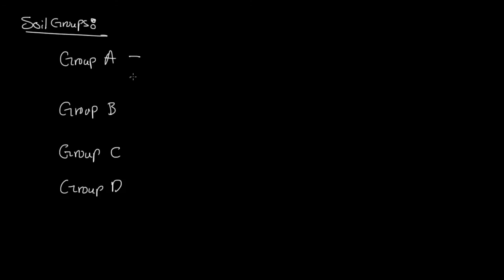Group A soils consist of deep sands, deep loess, and aggregated silts. Generally there's usually more sand and gravel in group A than there are in the other groups. If there's about 90% or more sand and gravel, it's safe to assume that it might be group A. Since there's a lot of sands and gravels, infiltration is pretty good in group A, and that means there's low runoff when group A soils are wet.